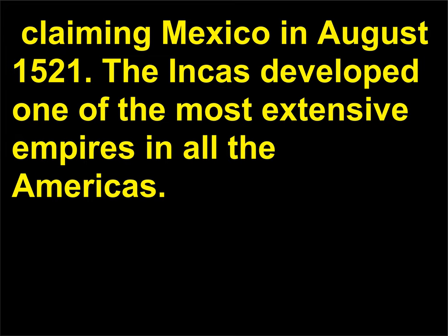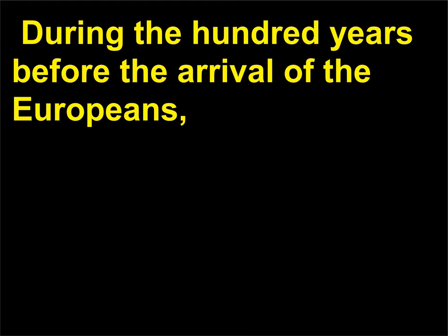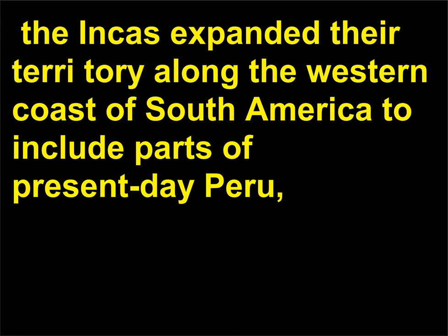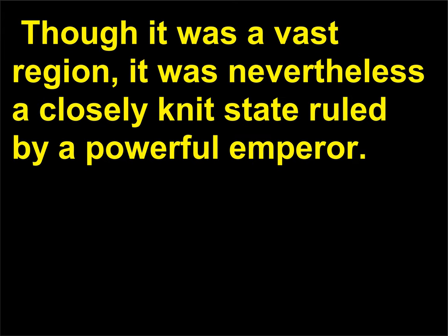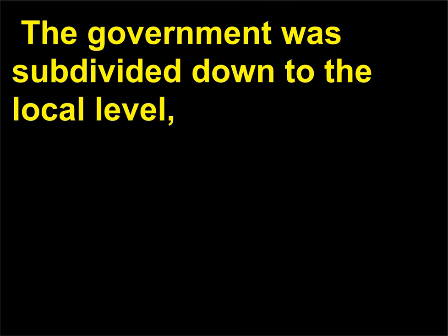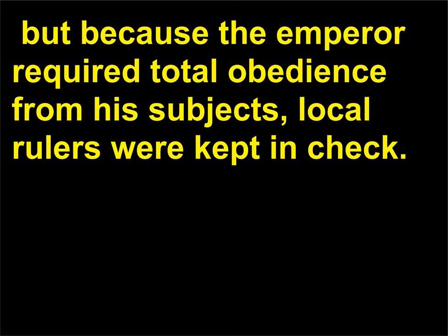The Incas developed one of the most extensive empires in all the Americas. During the hundred years before the arrival of the Europeans, the Incas expanded their territory along the western coast of South America to include parts of present-day Peru, Ecuador, Colombia, Bolivia, Chile, and Argentina. Though it was a vast region, it was nevertheless a closely-knit state ruled by a powerful emperor. The government was subdivided down to the local level, but because the emperor required total obedience from his subjects, local rulers were kept in check.